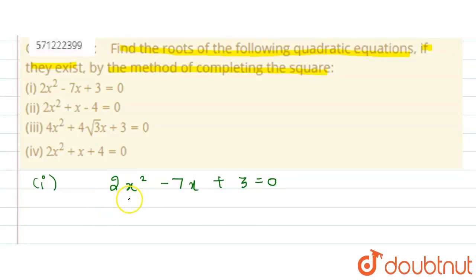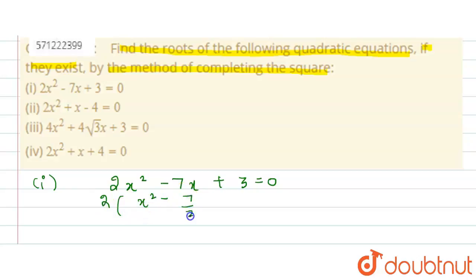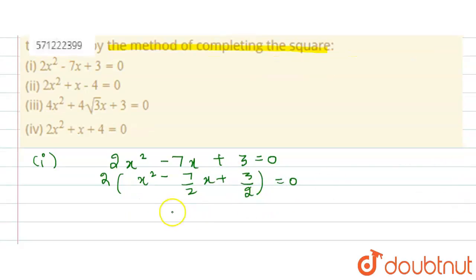First of all, to apply the method of completing the square, the coefficient of x² must be equal to 1. So taking out 2 as a common factor from the equation, we are left with x² minus 7/2 x plus 3/2 equals 0. Our equation becomes x² minus 7/2 x equals minus 3/2.